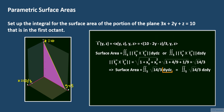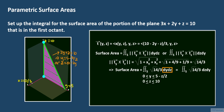If y is the first variable of integration, we follow the y direction on the yz projection. The projection starts on the z-axis where y equals 0, and finishes on the trace of the plane on the yz plane. On the yz plane, x equals 0, giving the trace equation 2y plus z equals 10. Solving for y gives y equals 5 minus z over 2. The minimum value of z is 0, and the maximum is 10 at the z-intercept.